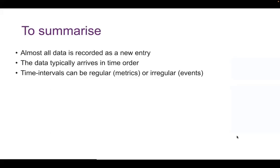I just wanted to draw attention to data collection because this helps to understand what time series data looks like. To summarize: almost all data is recorded as a new entry, the data typically arrives in time order, and the time intervals can be regular or irregular. Just for context, if a dataset has irregular intervals, then the events become unpredictable and cannot be modeled or forecasted, because forecasting assumes that whatever happened in the past is a good indicator of what will happen in the future.